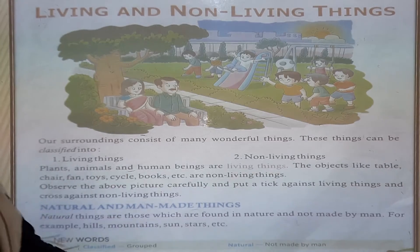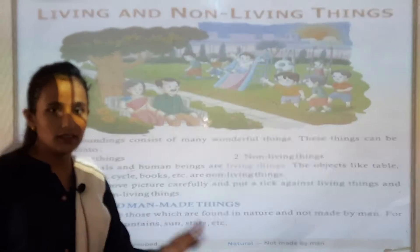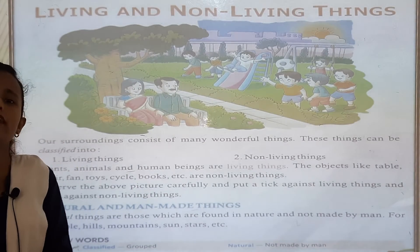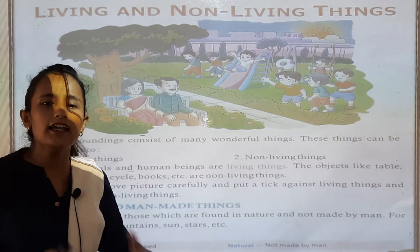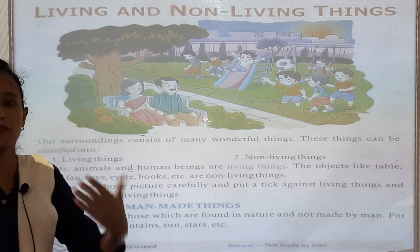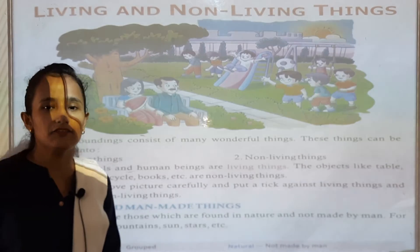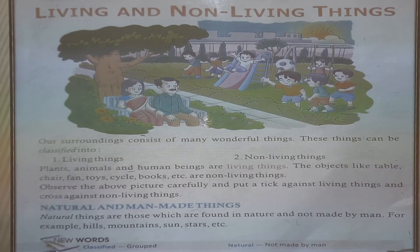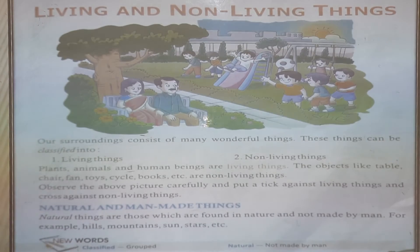For example, pencil, paint, books — they are non-living things. And living things are animals, plants, human beings. We are living things. Plants, animals and human beings are living things.